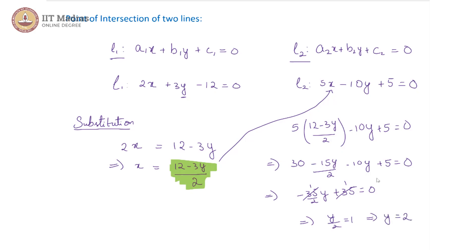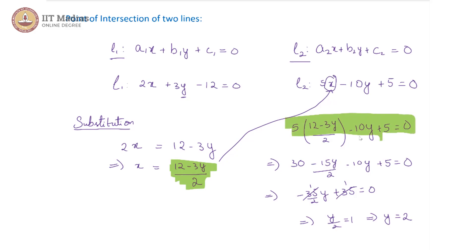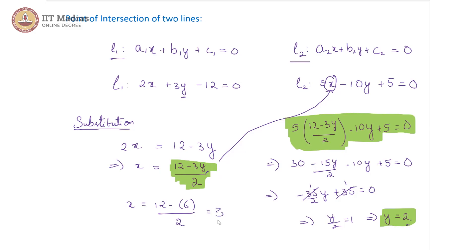Because we eliminated x, we got an equation entirely in y, which lets us solve for y and we get y equals 2. Now to obtain x, we simply substitute this value of y back into the expression for x. We get x equals (12 minus 6) divided by 2, giving us x equals 3. This means the solution for these two line equations is (3, 2) — x is 3 and y is 2.